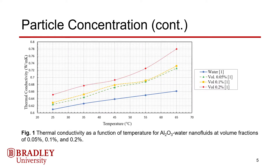Here you can see thermal conductivity as a function of temperature for sets of Al2O3 water data. Clearly, the nanofluid with the highest particle concentration of 0.2% by volume has the highest thermal conductivity for all temperatures. This is followed by the 0.1% concentration and lastly the 0.05% concentration. These results support the conclusion that thermal conductivity increases with an increase in particle concentration.